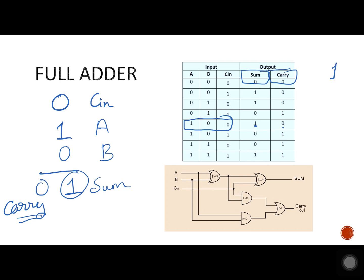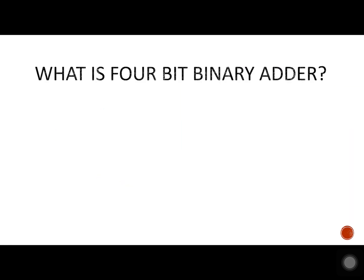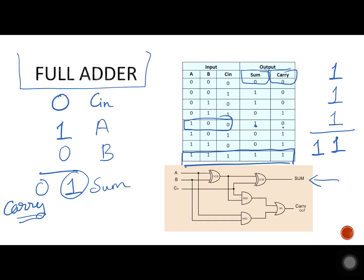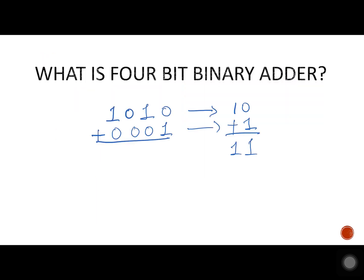Now let's take another example where we have carry as 1, A as 1, and B as 1. As we can see, sum is 1 and carry is 1. This is the circuit diagram of the full adder. It adds 3 bits and gives the sum and carry. If we add in binary system we get 1011, which means 11 in decimal.